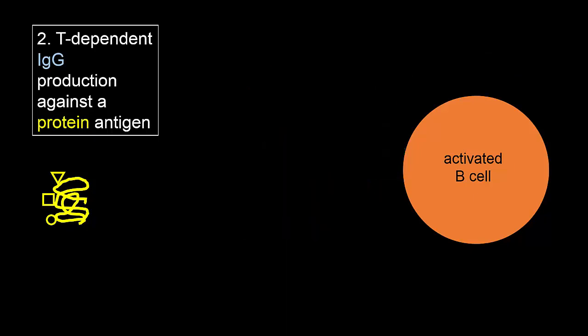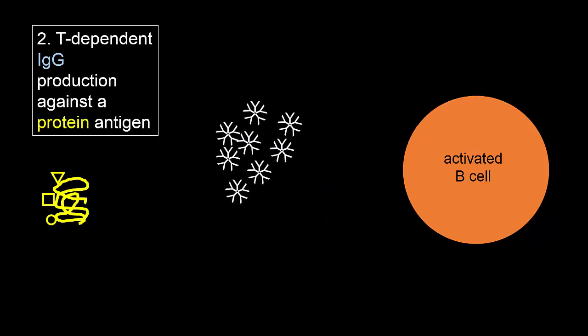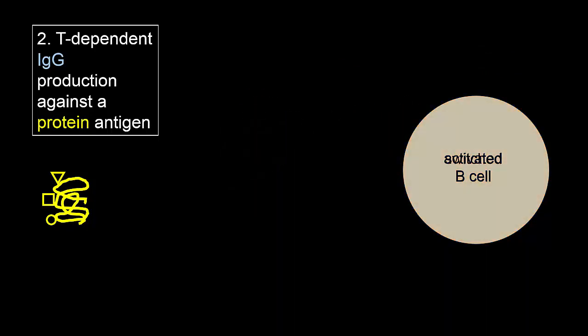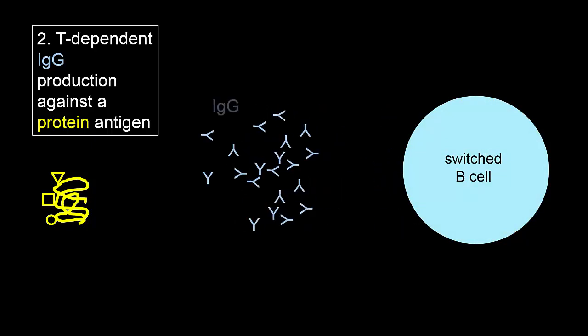The CD40 signal instructs the B cell to switch from making IgM to a downstream class. The activated cell first secretes IgM, and once it completes the necessary gene arrangements for class switching, it goes on to secrete IgG.